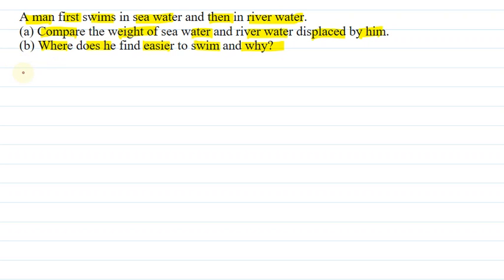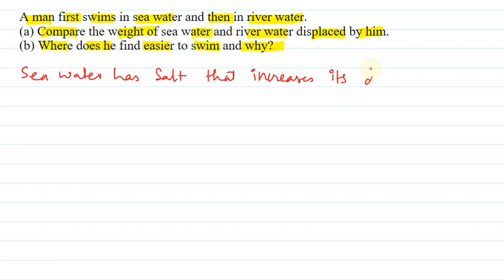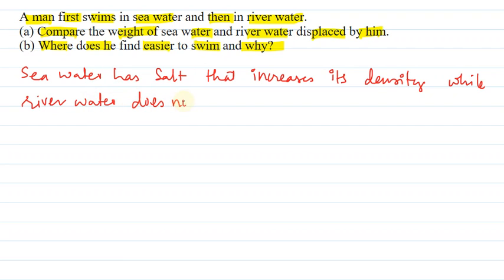Let us see the answer. Seawater has salt that increases its density, while river water does not have salt.